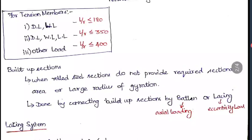When rolled steel sections do not provide the required sectional area or large enough radius of gyration, we go for built-up sections by connecting two or more sections together. There are two methods: the batten method and the lacing method. The batten method is used when the axial loading is purely axial; the lacing method is used when the load is somewhat eccentric to the center point.